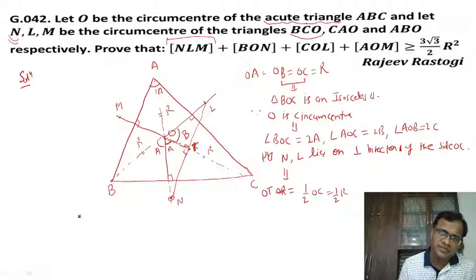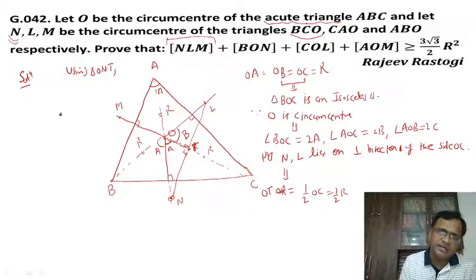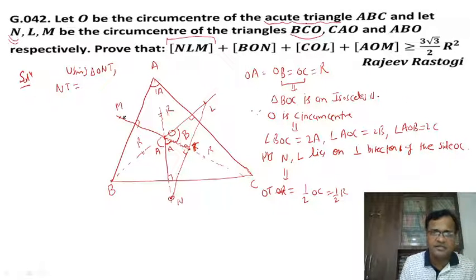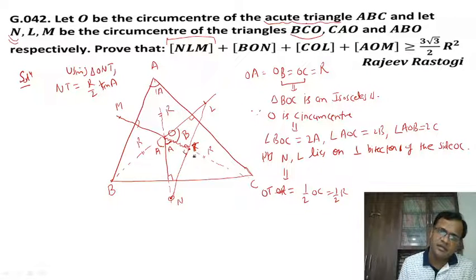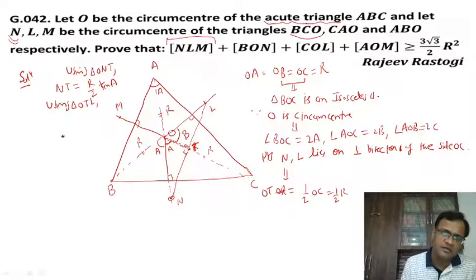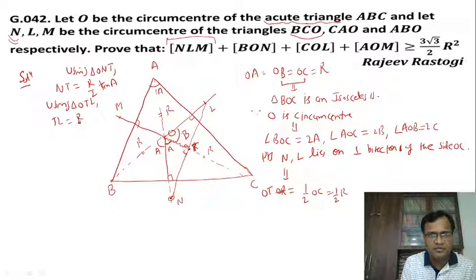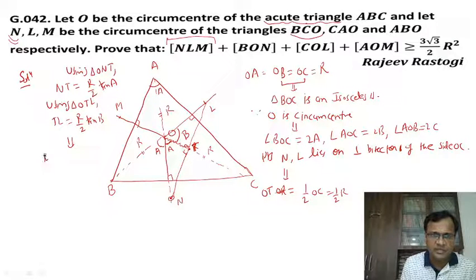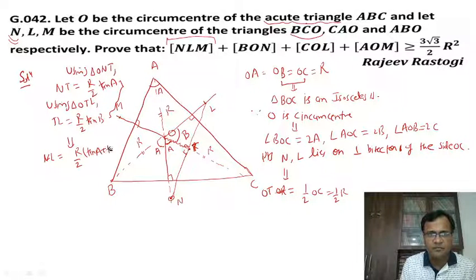Using triangle ONT, since OT = R/2 and NT is the opposite side, NT = R/2 · tanA. Similarly, using triangle OTL, TL = R/2 · tanB. These two results together imply that NL = NT + TL = R/2 · (tanA + tanB).